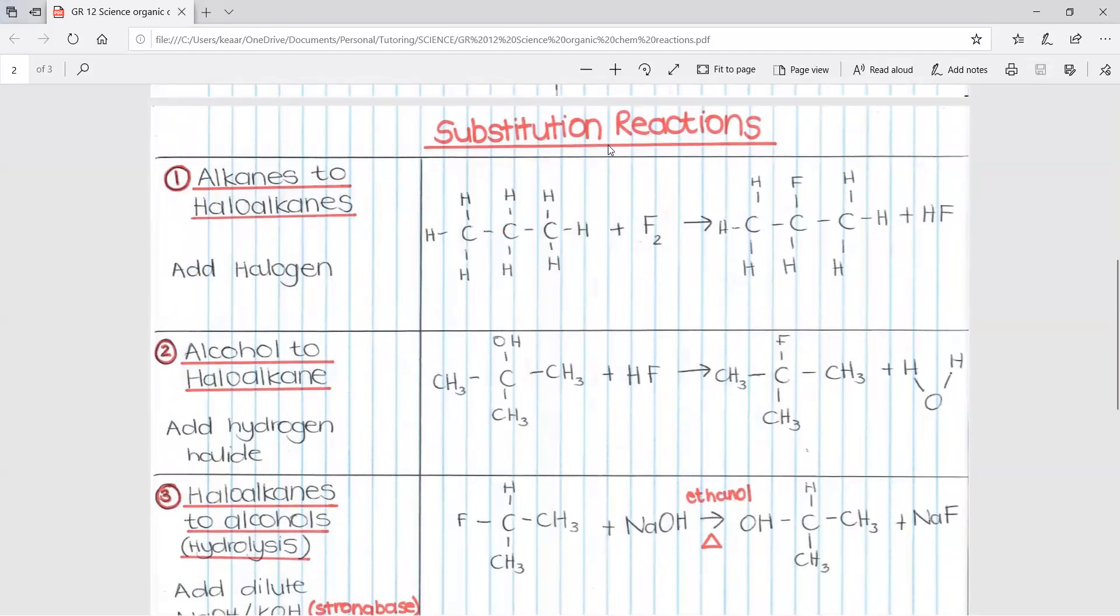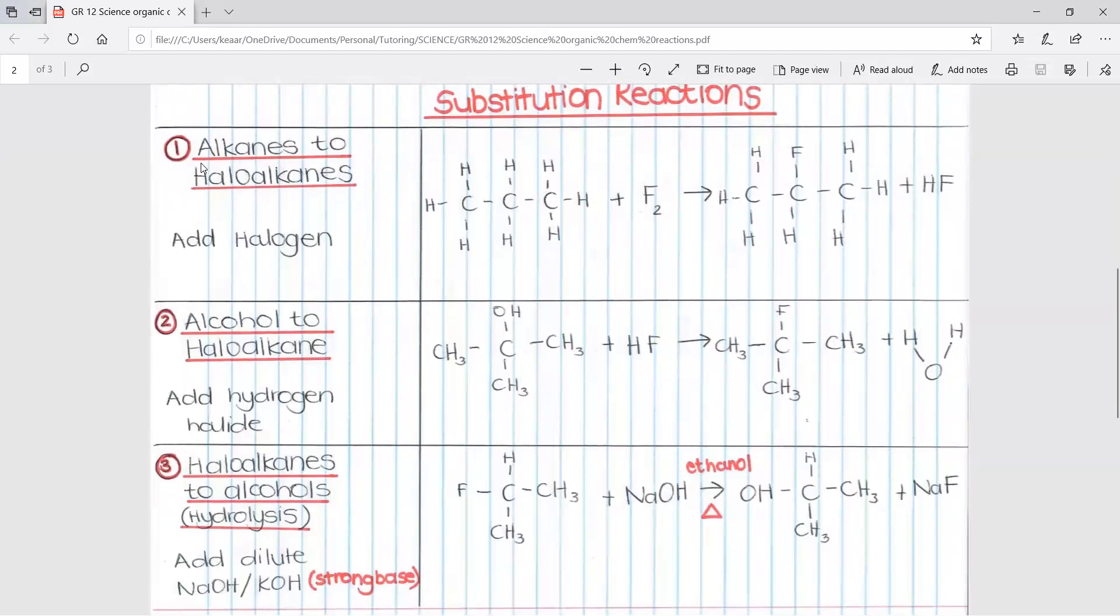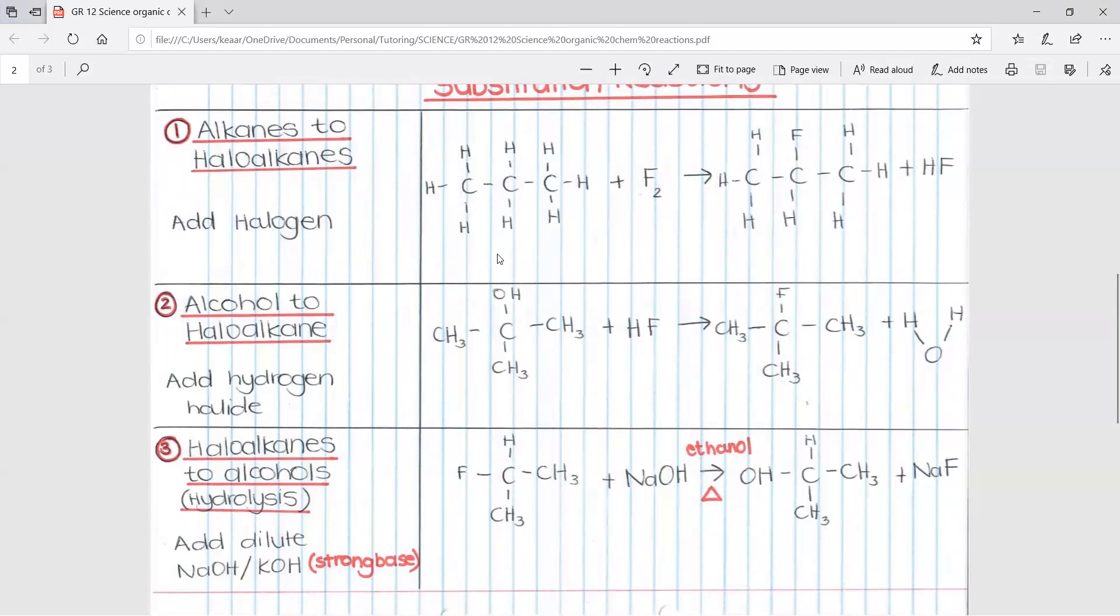Substitution reactions. There are only three substitution reactions. The first is alkanes to haloalkanes. The main gist of this is when you add halogen. So here we have a basic alkane and we add the halogen fluorine. What happens is the hydrogen over here gets substituted with one of the fluorines and this hydrogen will then join with the other fluorine and it will form this haloalkane halogen, along with hydrogen fluoride. A side note of this is it needs light or heat and it can continue until all hydrogen atoms have been replaced by halogen atoms.